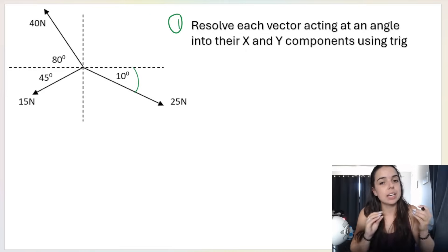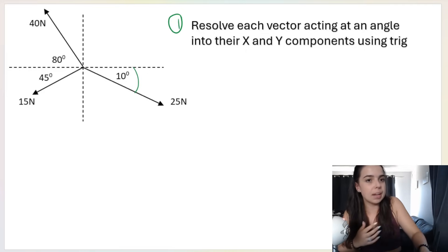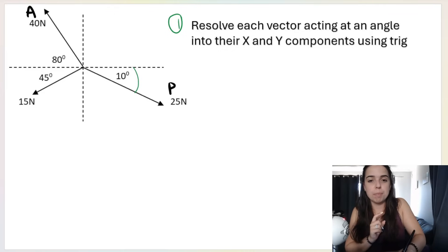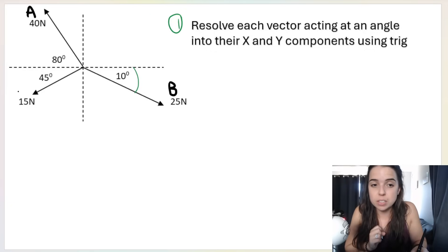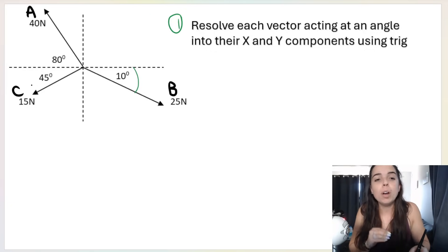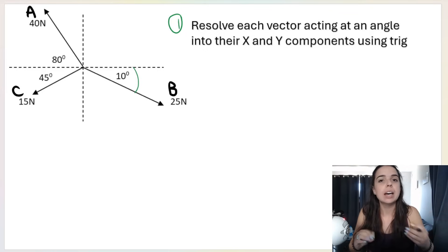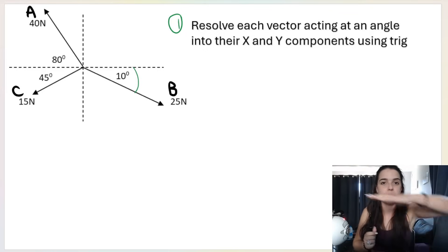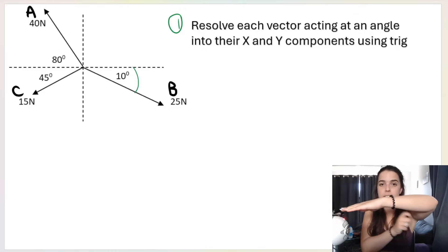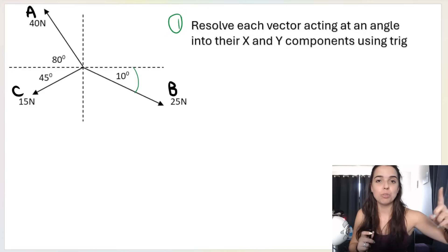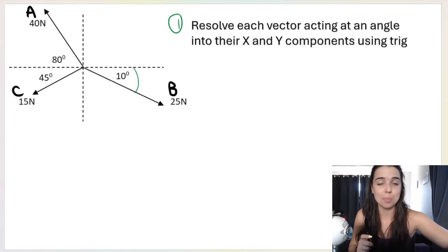What we do is we take each vector and label them to make our job a little bit easier. I'm going to call the 40 newton vector A, the 25 newton vector B, and the 15 newton vector C. I'm going to draw little triangles, and with these triangles we will see how these vectors are broken down into their horizontal or x components and their vertical or y components. Let me draw the triangle for A to show you first as an example.